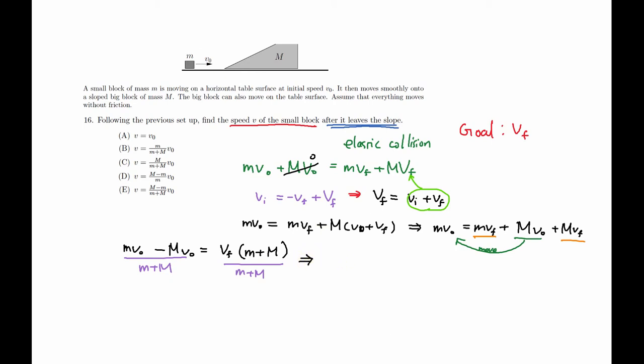So we get small VF. Again, I know it's kind of not easy to see small VF, so you don't get confused. VF equals, okay, this side cancels out, so M. Okay, you know we can factor out the V0 outside.